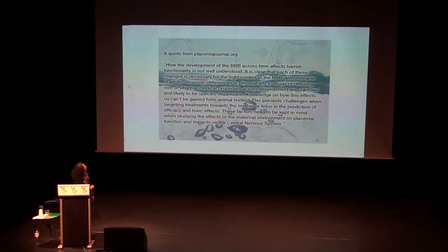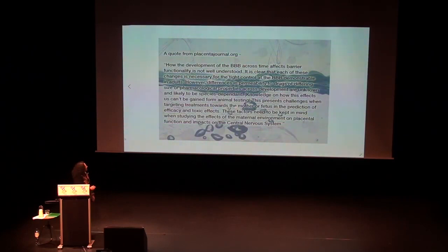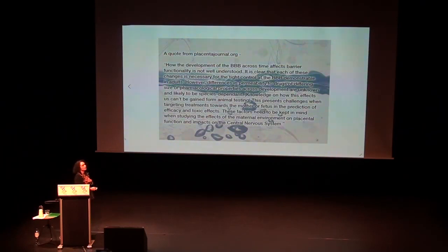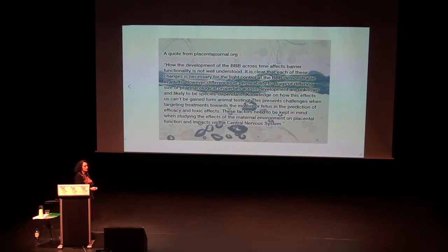How the development of the blood-brain barrier across time affects barrier functionality is not well understood. Knowledge on how this affects us can't be gained from animal testing. So they're pumping this stuff into people — you can't test it on people, but we're all their guinea pigs. These factors need to be kept in mind when studying the effects of the maternal environment on placental function, because a lot of the time they give mothers injections before the child is born. That happened to me — I was pregnant and received two flu shots under the military medical system. I felt like I was dying for a week, and at my next checkup they kept me there because they said they couldn't find any amniotic fluid.